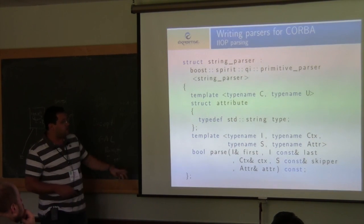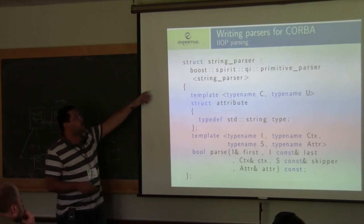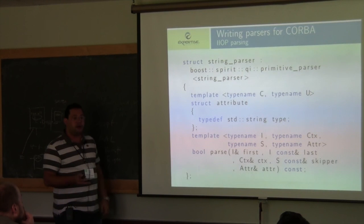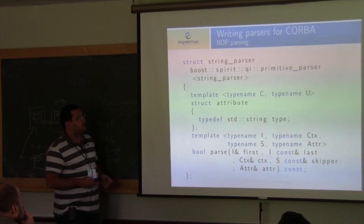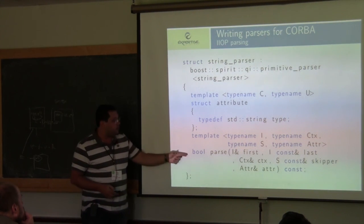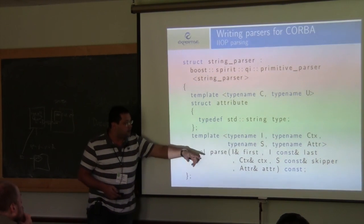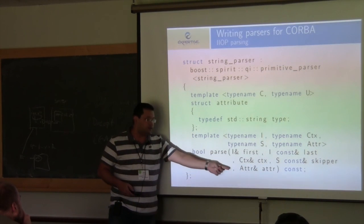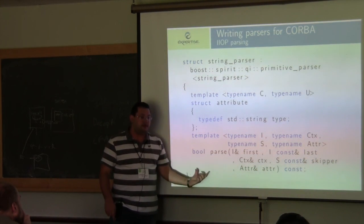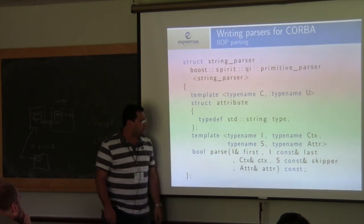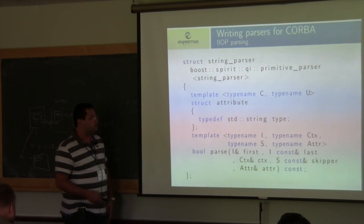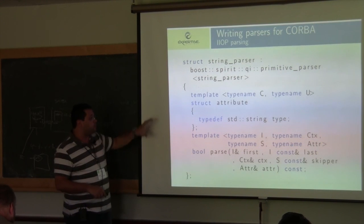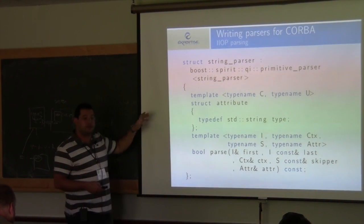The string parser is defined as a primitive parser because it is not a directive and doesn't receive multiple parsers. In the bool parse function we write imperative code that receives the iterators, the context, the skipper, and the attribute. The attribute is where the parser assigns the result of parsing — hopefully a standard string. This is for Boost Spirit v2; on Spirit X3 it is actually easier to create custom parsers.